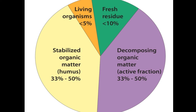So let's take a look at all these different types of organic matter in the soil. First of all, we have living organisms. It is made up of bacteria, fungi, nematodes, protozoa, arthropods, and many other living organisms in the soil.